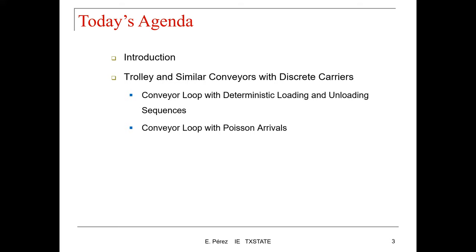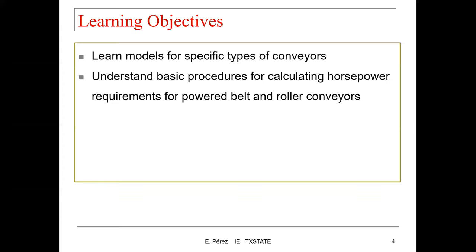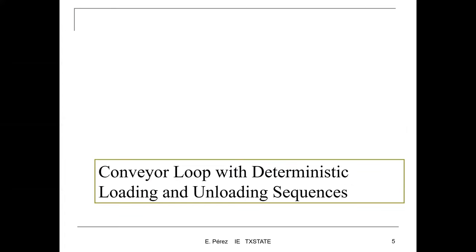The idea now is to relax the assumption that we know for sure the loading and unloading sequences. Now we want to add uncertainty by introducing Poisson arrivals represented by the Poisson distribution. The learning objectives for this lecture are to learn models for specific types of conveyors and understand the basic procedures for calculating horsepower requirements for power belt and roller conveyors. In our previous lecture, we focused on the conveyor loop with deterministic loading and unloading sequences.